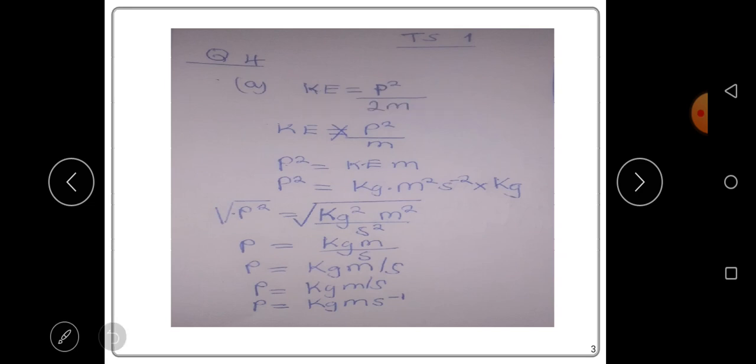So, here, we have to make P squared or P the subject of the formula. So, to make the subject the formula, you cross and multiply, which we get this statement there, the mathematical statement.